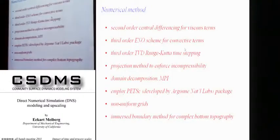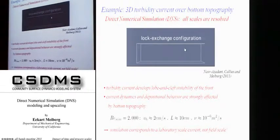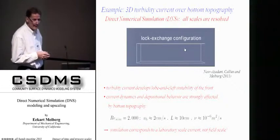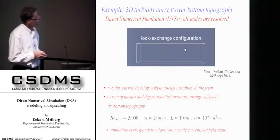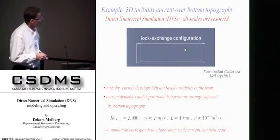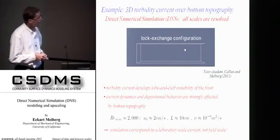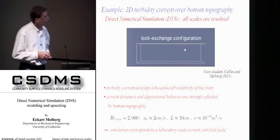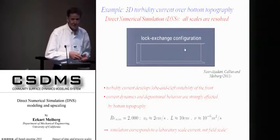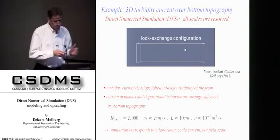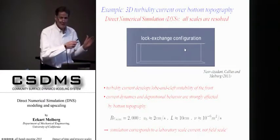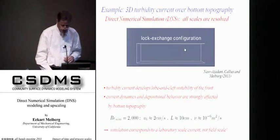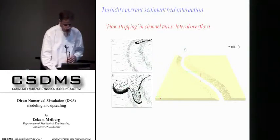This DNS simulation was carried out not for a Reynolds number of 10 to the 9 — corresponding to a real field-scale current — but for a smaller Reynolds number of 2,000. That corresponds more to a front velocity of 2 centimeters per second, a length scale of perhaps 10 centimeters, which very much corresponds to a laboratory-scale current, not a field-scale current. So we can do DNS simulations for the laboratory scale but not for the field scale, and that's something we would like to overcome because eventually we want to make simulations for field-scale currents.